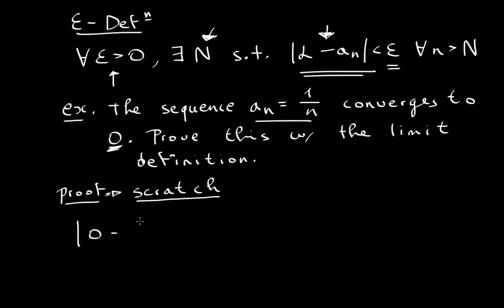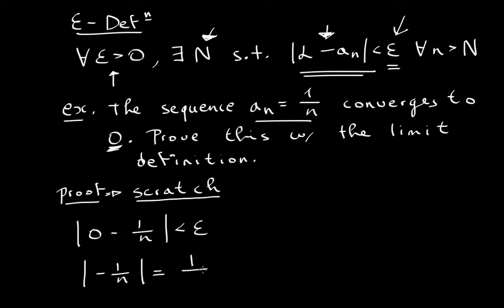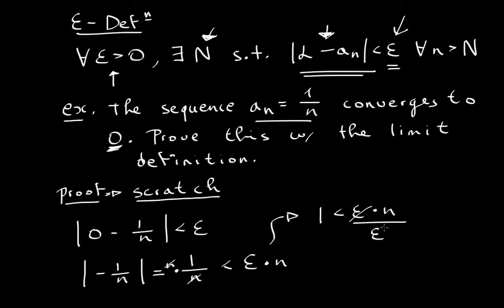So I write zero minus 1 over n, and I know this has to be less than epsilon. Zero minus 1 over n is negative 1 over n, and the absolute value of that equals 1 over n. So this has to be less than epsilon. If I multiply n to both sides, n cancels, giving 1 is less than epsilon times n. Dividing epsilon from both sides gives 1 over epsilon is less than n.